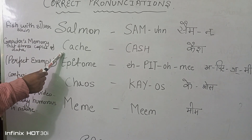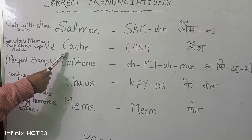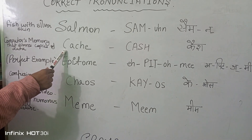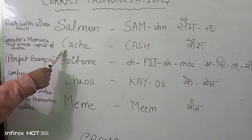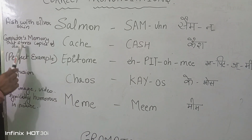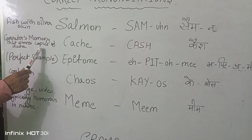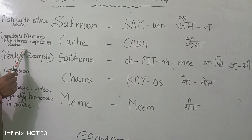The next one is cache. It's not the money cash — it's the computer's memory that stores copies of data.